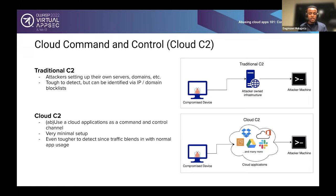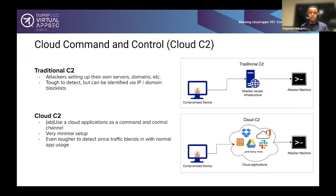What attackers have recently started doing is using cloud applications as a medium for command and control. Instead of attacker-owned infrastructure, we see Dropbox instances, Google Drive folders, Slack channels, and S3 buckets used as a medium to tunnel commands back and forth. Why would an attacker want to do this? Firstly, it's very minimal setup — easy to get going in these cloud apps. Secondly, they're cheap if not free, so very cost-efficient. Thirdly, it's even tougher to detect this traffic since these apps are so popular and ubiquitous — you blend in with existing traffic much more.